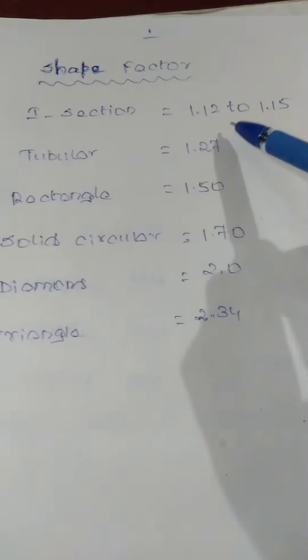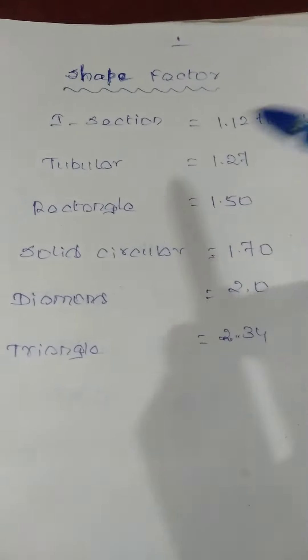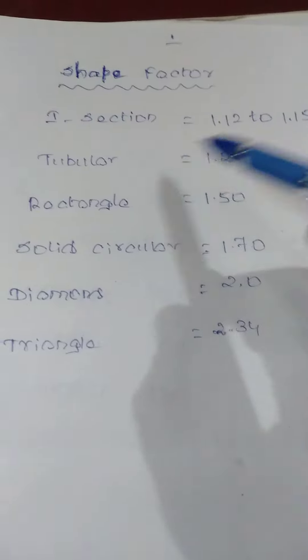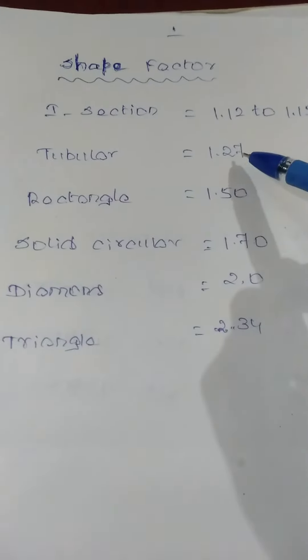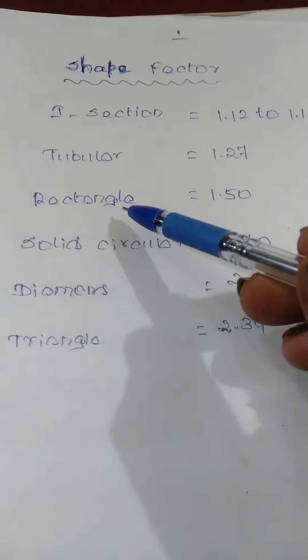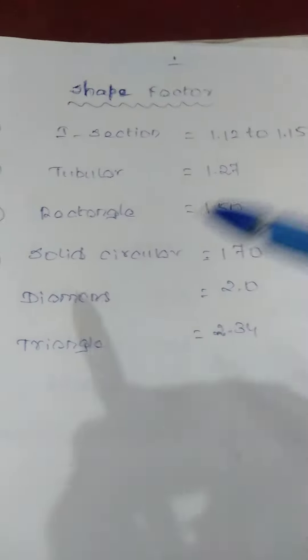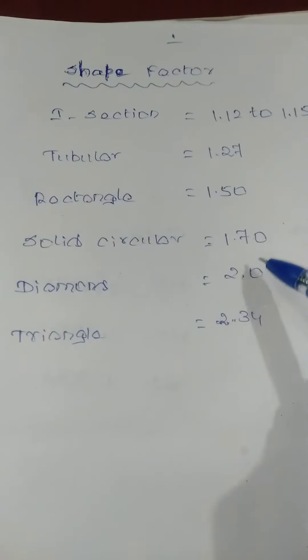It is 1.12 to 1.15 for I-section. The tubular section is 1.27. The rectangle shape factor is 1.5. The solid circular is 1.7.